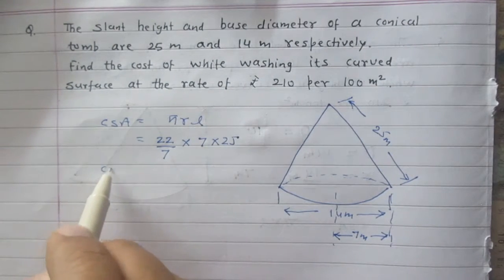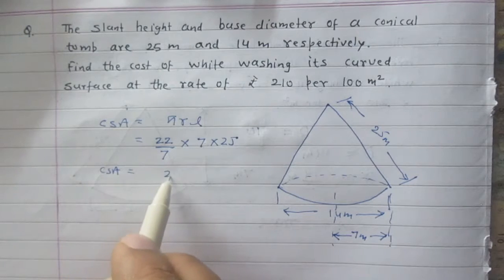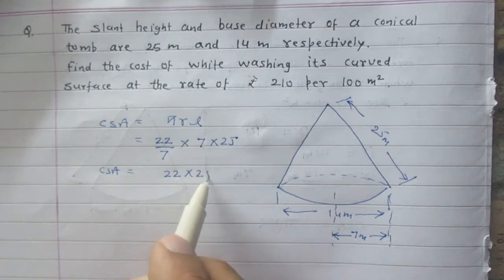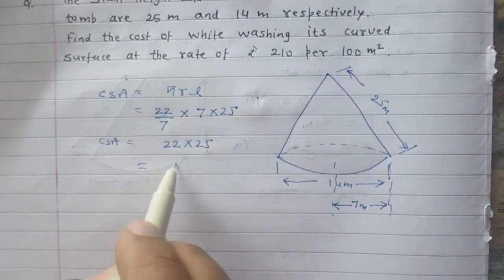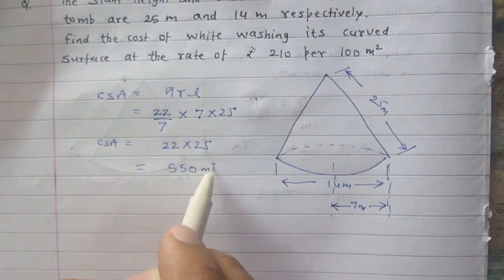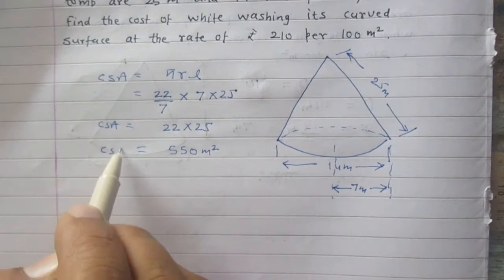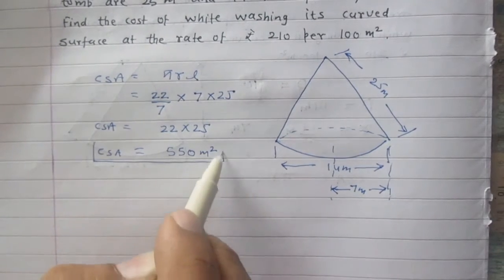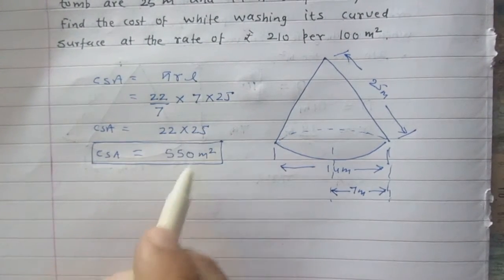So curved surface area after calculation is 22 × 25 which is 550m². So curved surface area of this conical tomb is 550m².